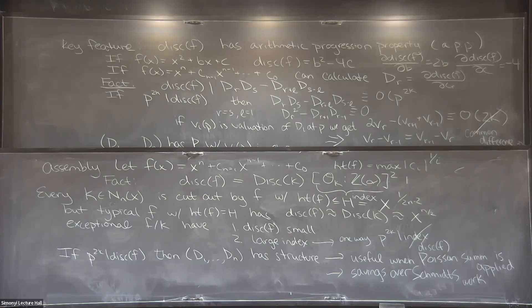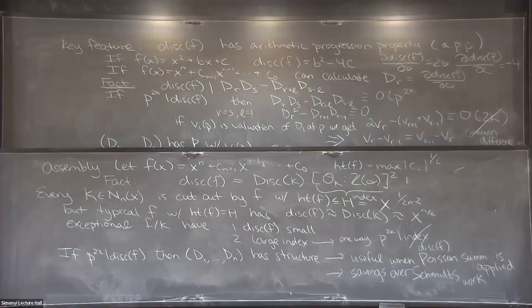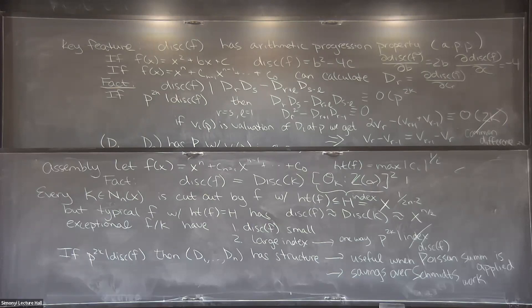The speaker adds that the conjecture O(X) is expected to hold not only for fixed degree but also when summing over all degrees simultaneously — taking all fields of all degrees with discriminant up to X, the total is expected to be O(X). The conjecture for fixed degree likely goes by 'Linnik's conjecture,' and Schmidt's paper probably references Linnik. The audience thanks the speaker for a beautiful talk.